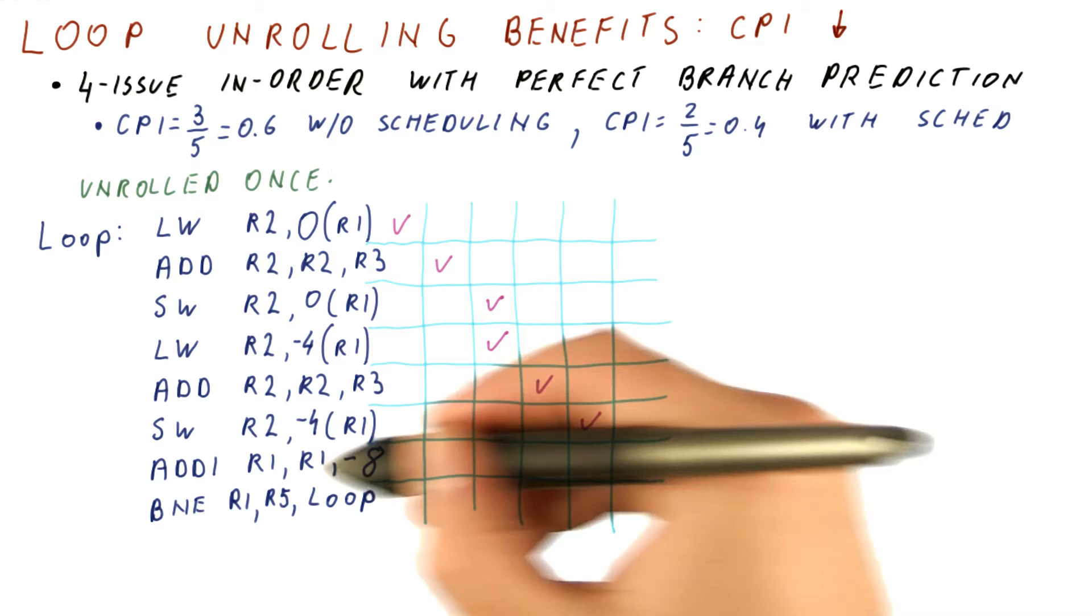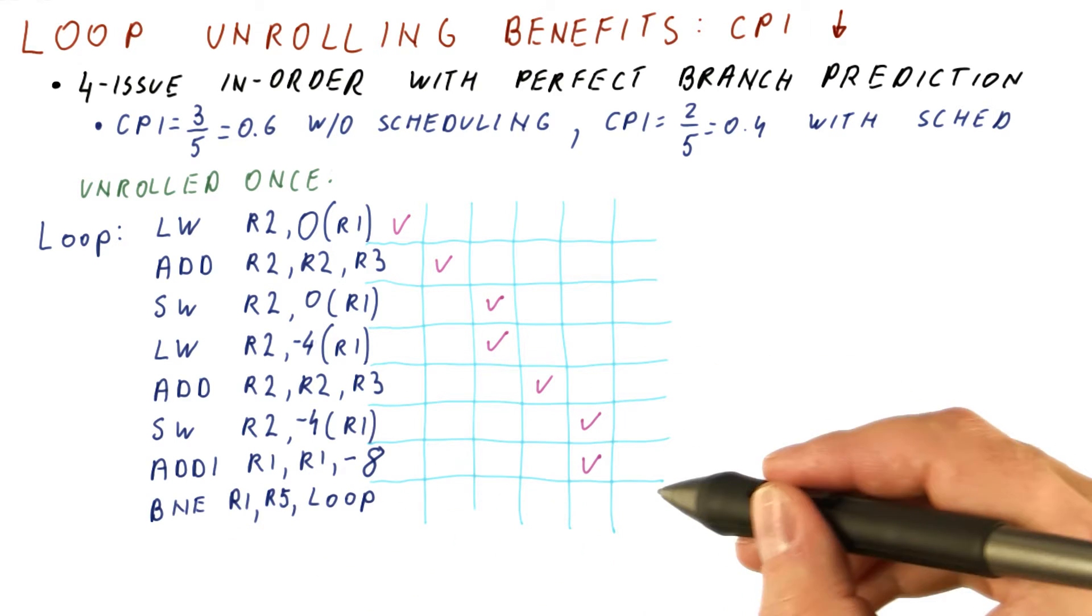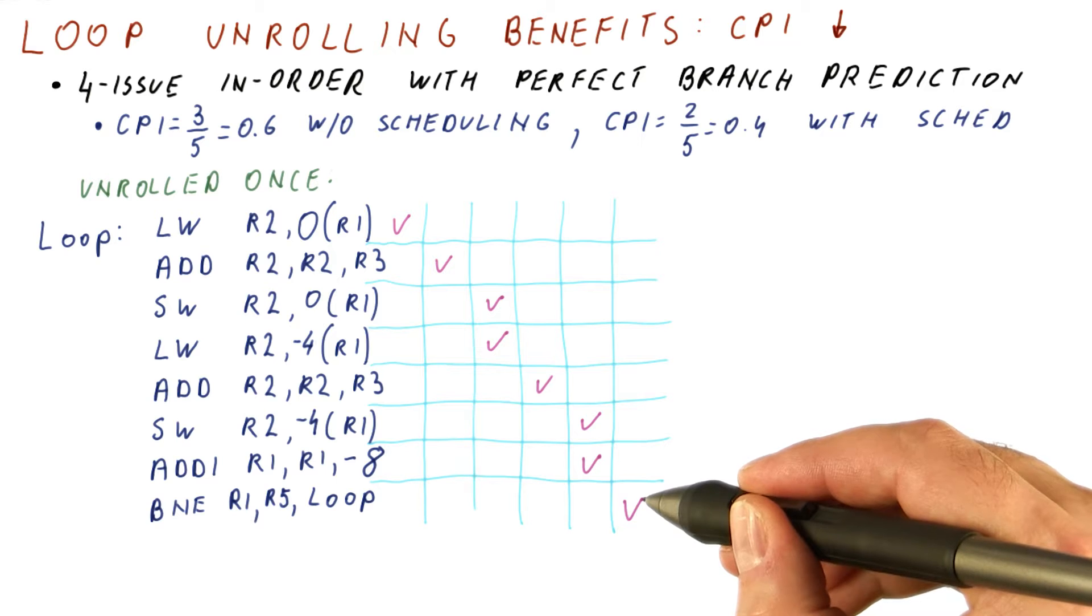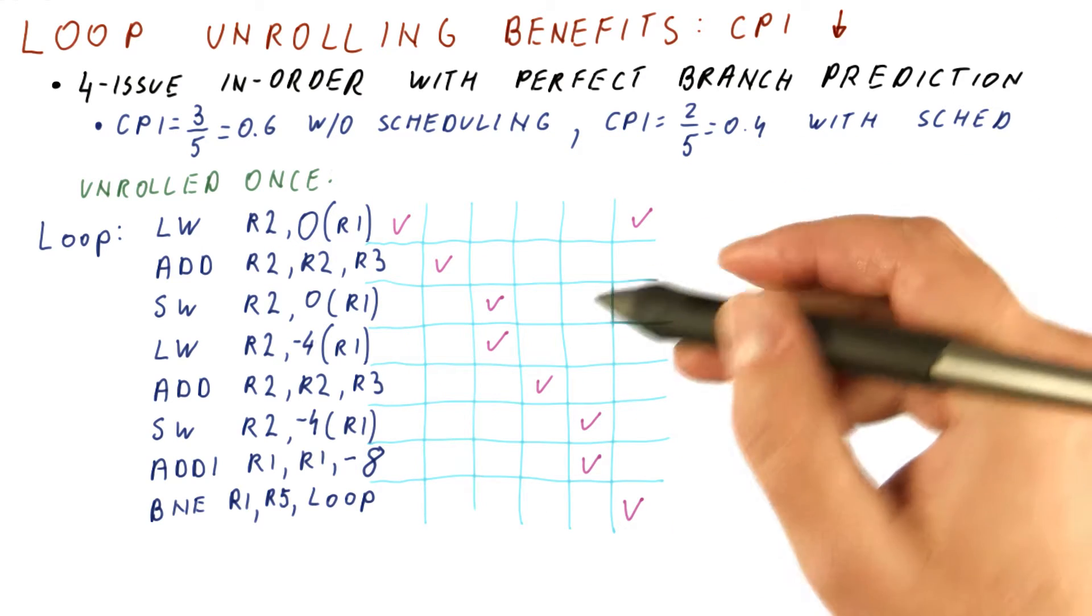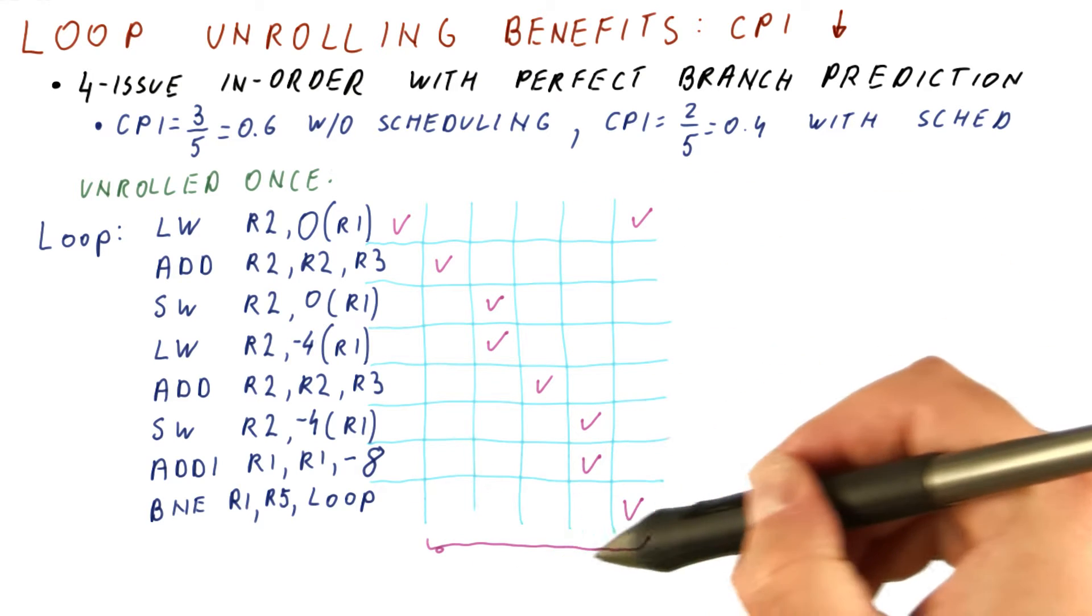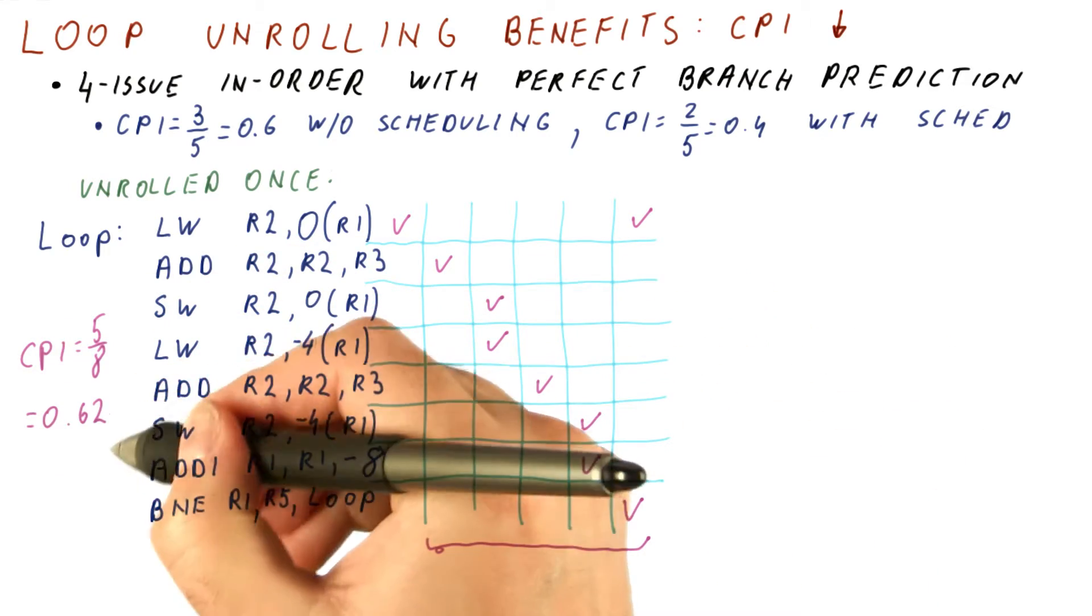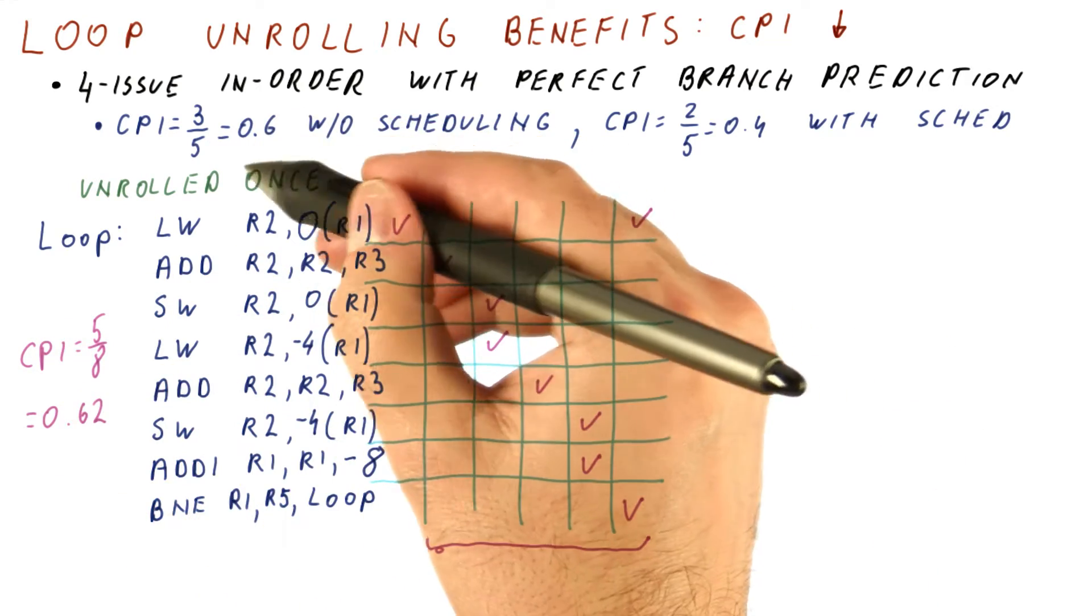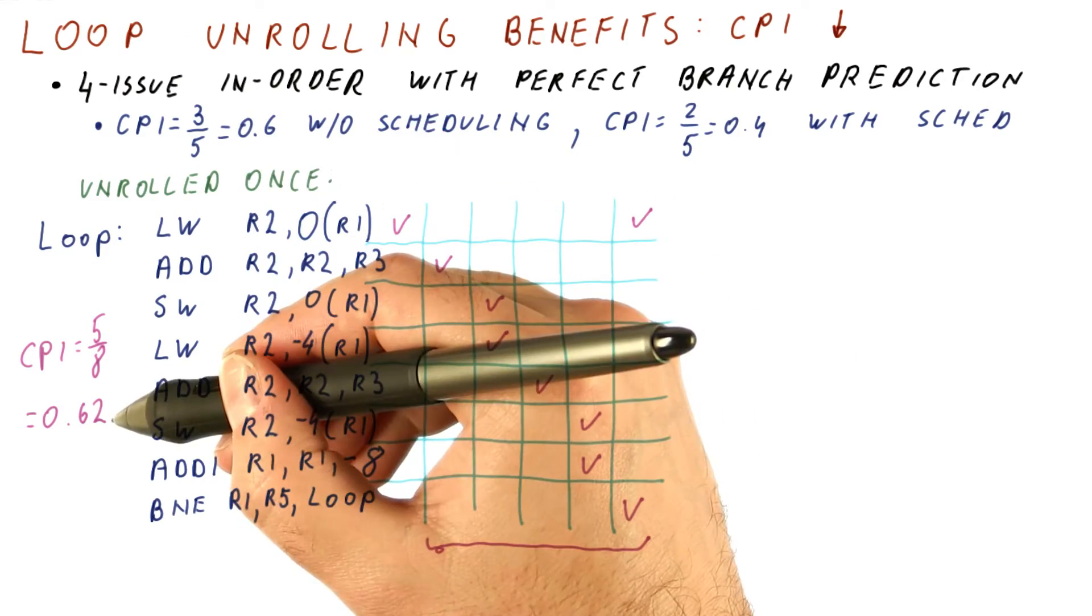And then this decrement of the pointer can proceed in parallel with the store, but the branch has to wait for R1. However, then the load can proceed, and now we are back to where we started. So overall, it takes us five cycles to do these eight instructions, which gives us a CPI of 0.62, slightly lower than the original unscheduled loop, but not much lower.